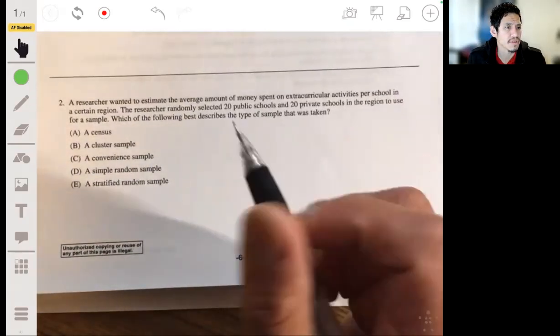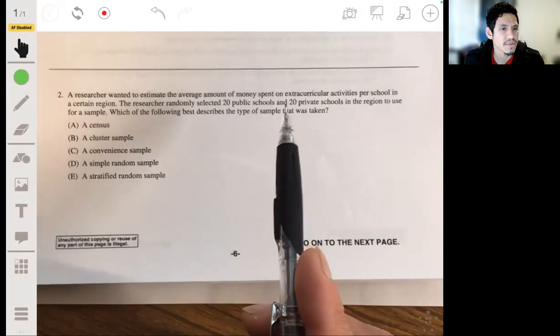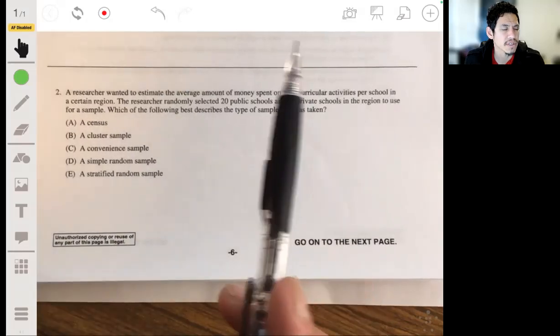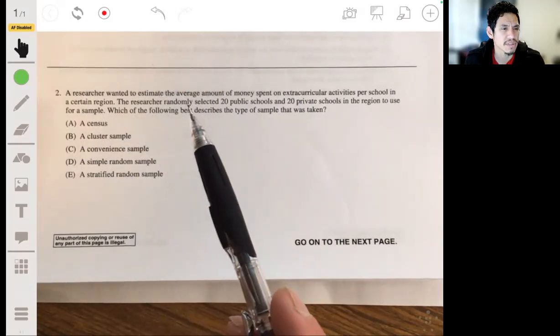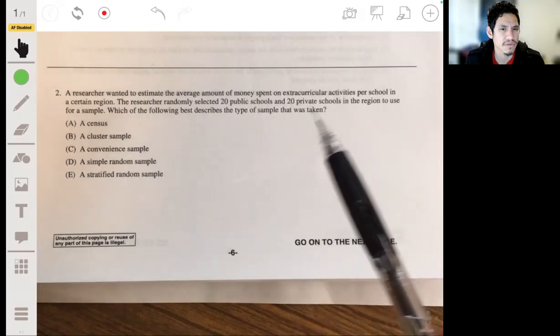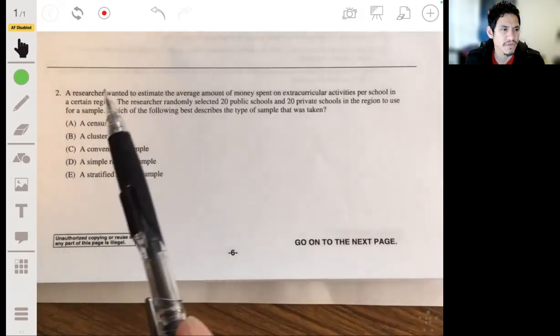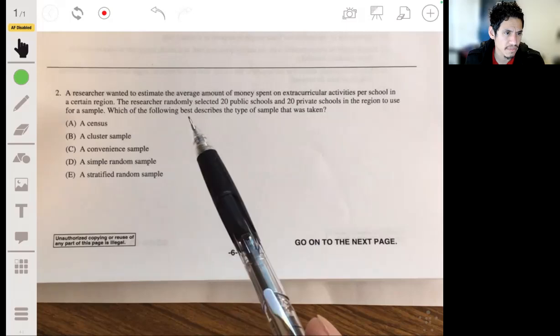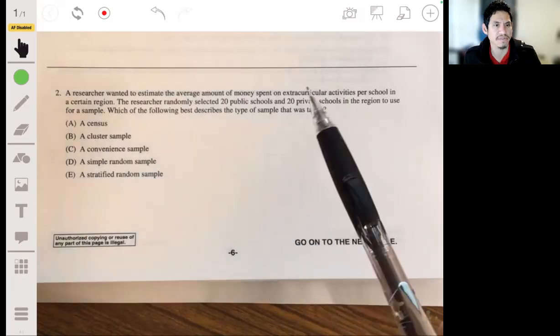And problem two, a researcher wanted to estimate the average amount of money spent on extracurricular activities per school. The researcher randomly selected 20 public schools in the region to use for a sample. Which of the following best describes the type of sample that was taken?